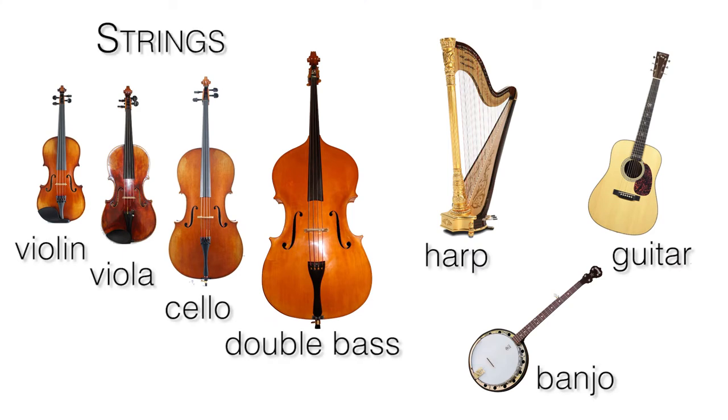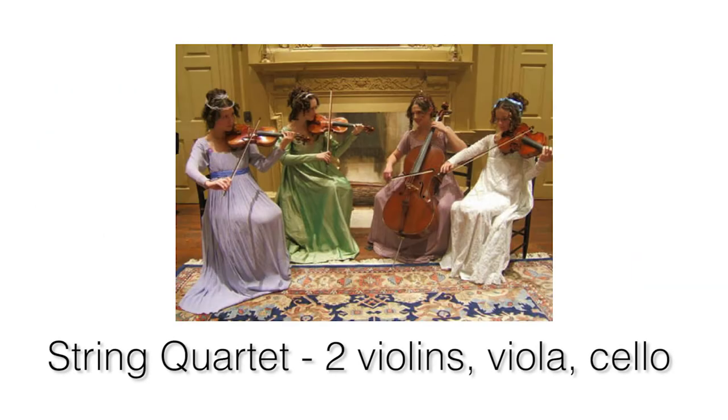Now we go on to the families of instruments. What family is present in a symphony orchestra but not in a concert band? The answer is the string family. I would like you to name three string instruments. String instruments include the violin, the viola, the double bass, the cello — cello is the most often misspelled word on the test; it's pronounced like it needs a C-H beginning but being derived from Italian, it's simply C-E-L-L-O. Also harp, guitar, and banjo. Pictured here are four ladies comprising a string quartet, which consists of two violins, a viola, and a cello.